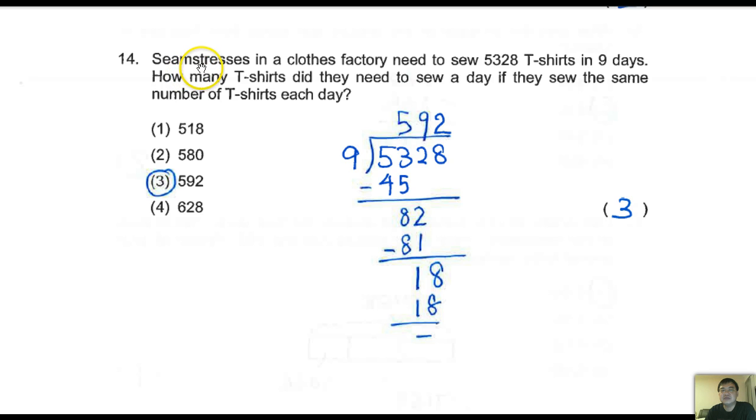Carry on with this. Seamstresses - seamstresses means those ladies who sew and cut clothes. In the factory, they need to sew 5328 t-shirts in 9 days. How many t-shirts did they need to sew in a day if they sew the same number of t-shirts each day? All you have to do is divide. You take this number, 5328 divided by 9, and you get this number. The answer is 3. Make sure your steps are correct.